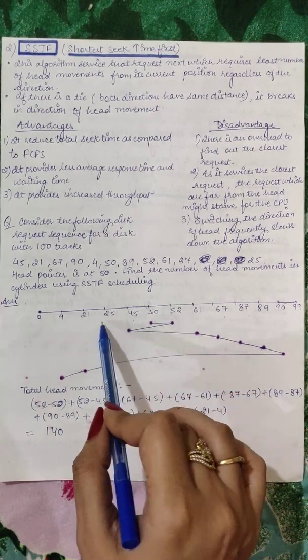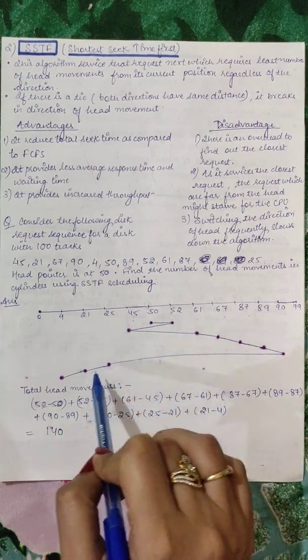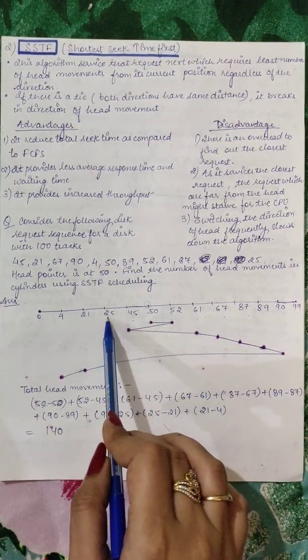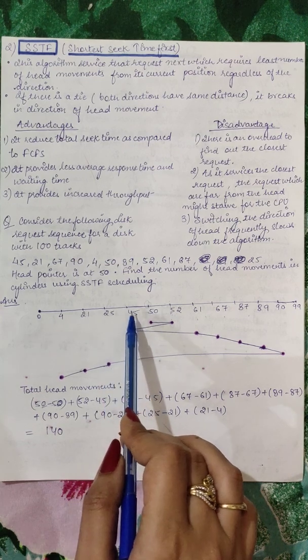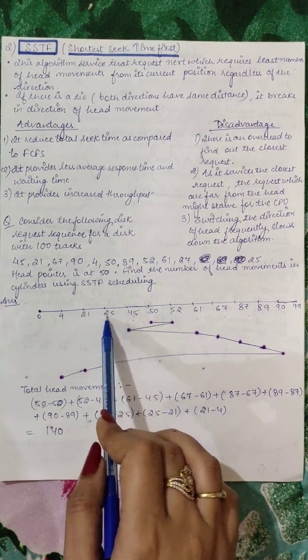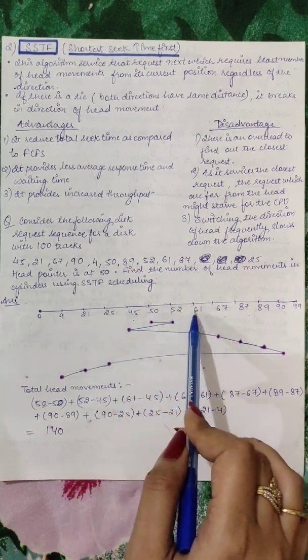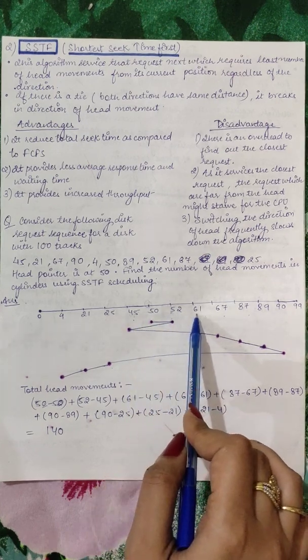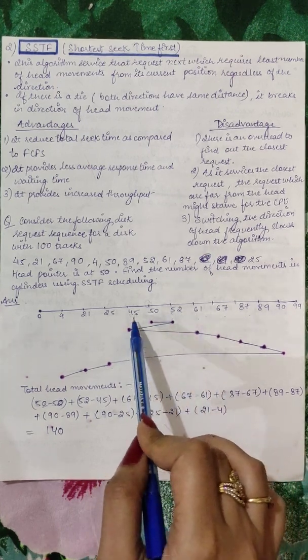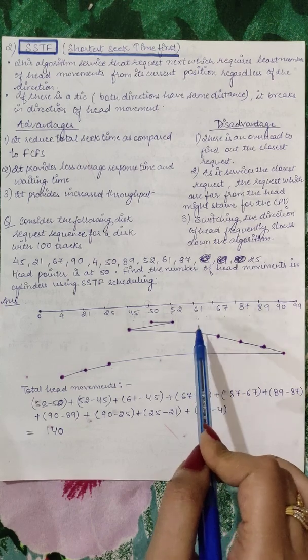From 45, it can go to 25 or it can go to 61. So if it goes to 25, here it will be 20 of traveling, the seeking time will be 20. In 45 to 61, it will be 16, so the better option is to travel from 45 to 61.